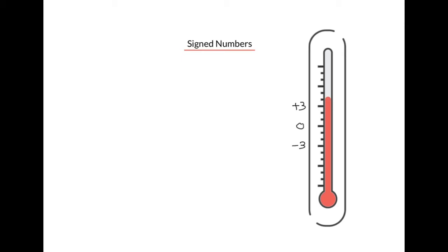So if we wanted to find the temperature based on this scale, we'd start at 0 and go up 1, 2, 3, 4 places. So the temperature is plus 4 degrees.